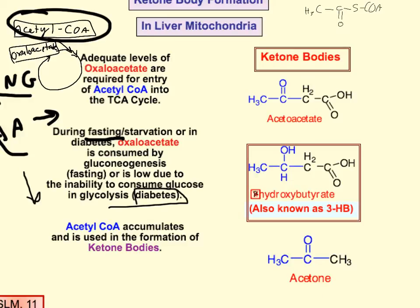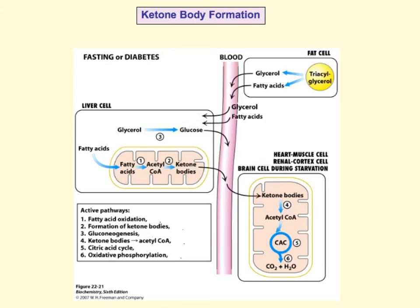The big picture is: during fasting or diabetes, your adipose tissue mobilizes glycerol and fatty acids. The glycerol is used for gluconeogenesis to produce glucose, and the fatty acids go through beta-oxidation to produce acetyl-CoA. The buildup of acetyl-CoA forms into ketone bodies, which are pumped into peripheral tissues and broken back down into acetyl-CoA and used in the citric acid cycle to produce energy.